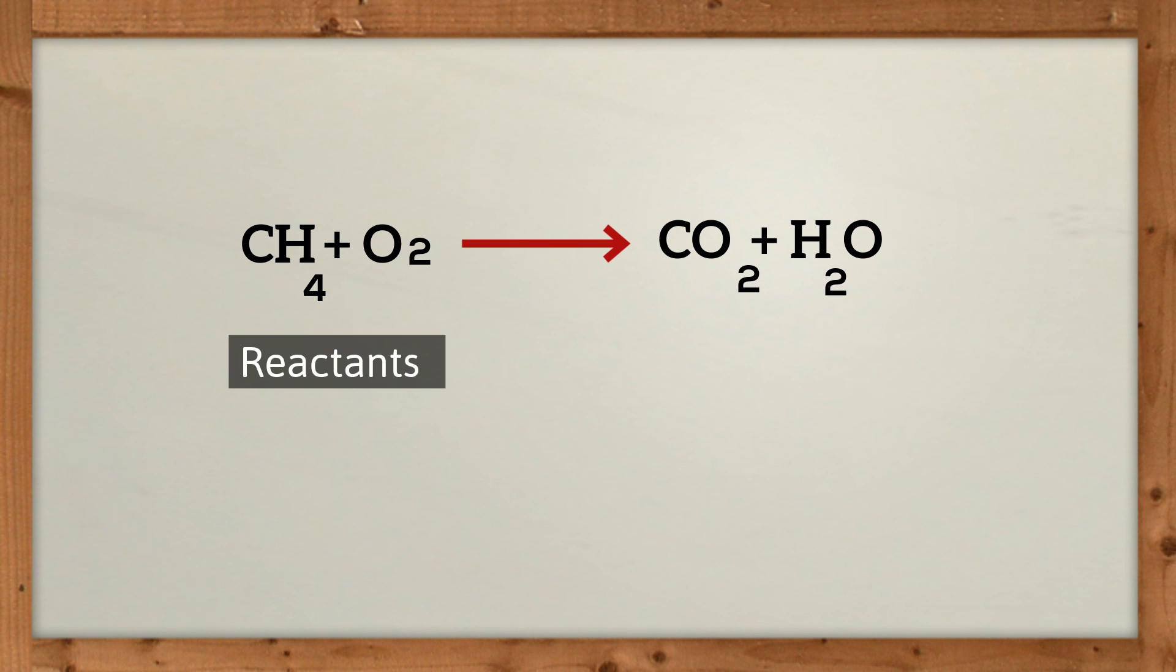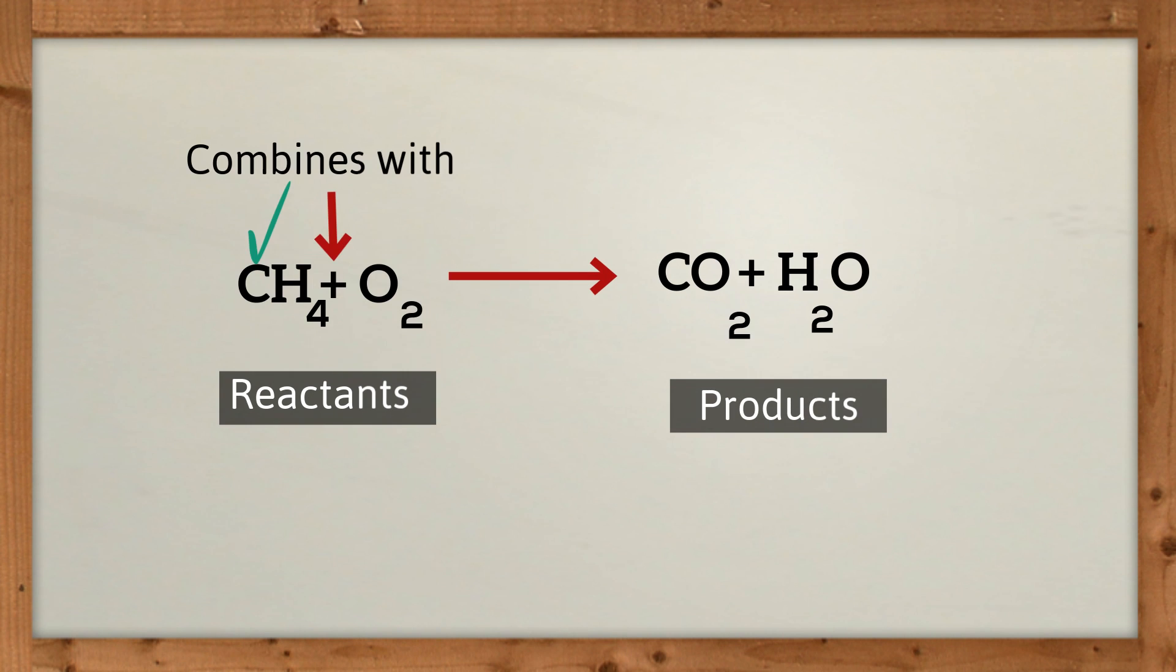First, the reactants are found on the left of the arrow, and the products are on the right of the arrow. This equation has CH4, which is methane, combining with oxygen, represented by O2.